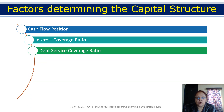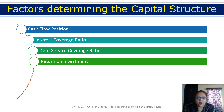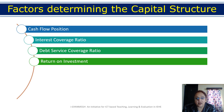The debt service coverage ratio is also an important factor in determining capital structure. After that, return on investment — if ROI is higher, you can issue more debentures. For example, if return on investment is 14% or 15% and you are paying only 10% interest to debenture holders, that is favorable. But if ROI is only 5% or 6% and you must pay 10% interest, that is not a good situation. This will be explained further later in the video.